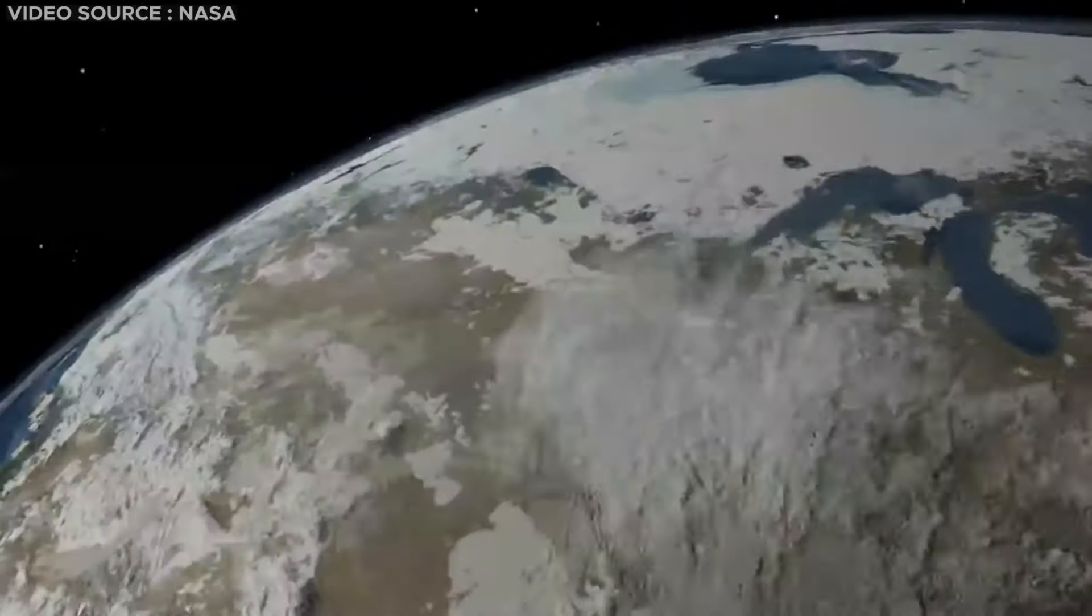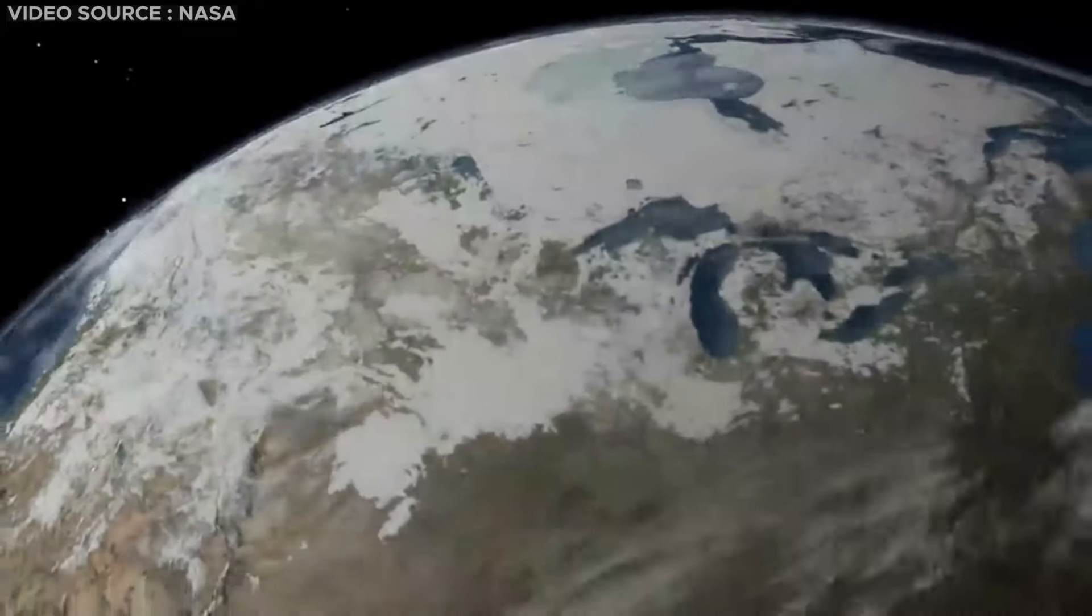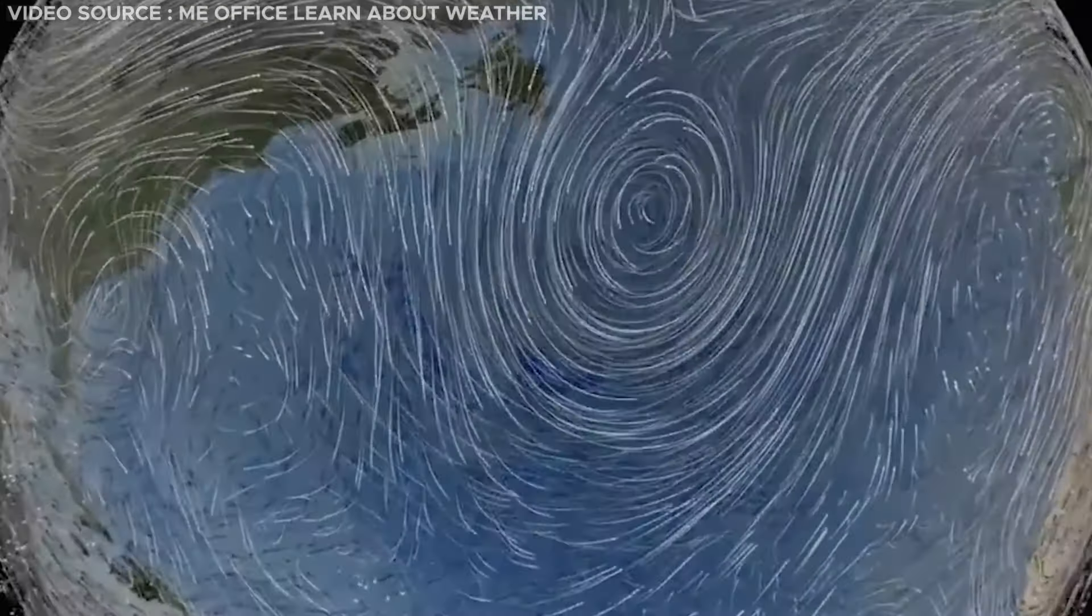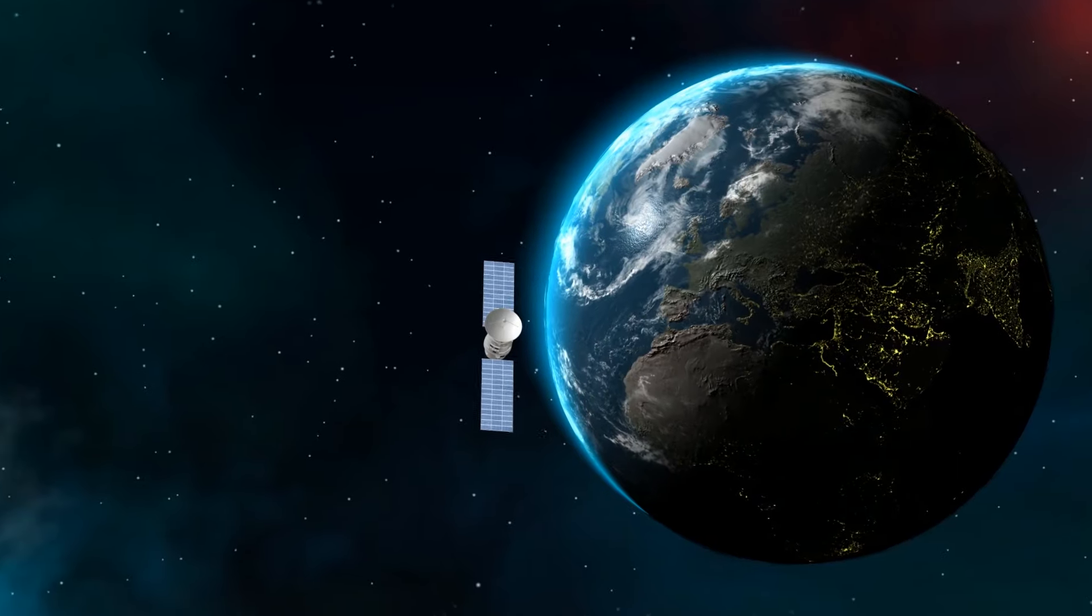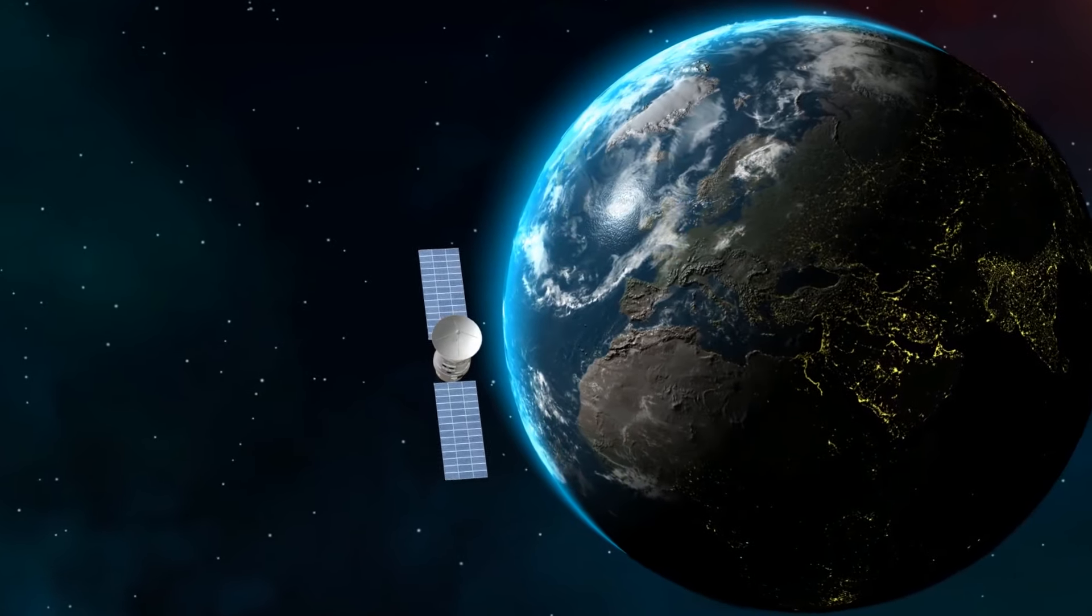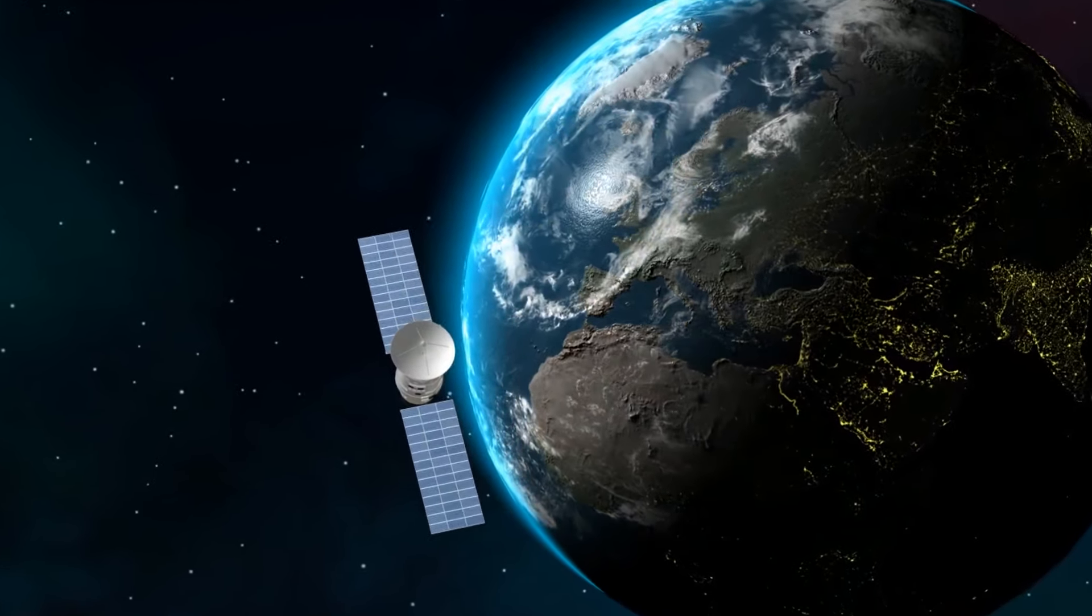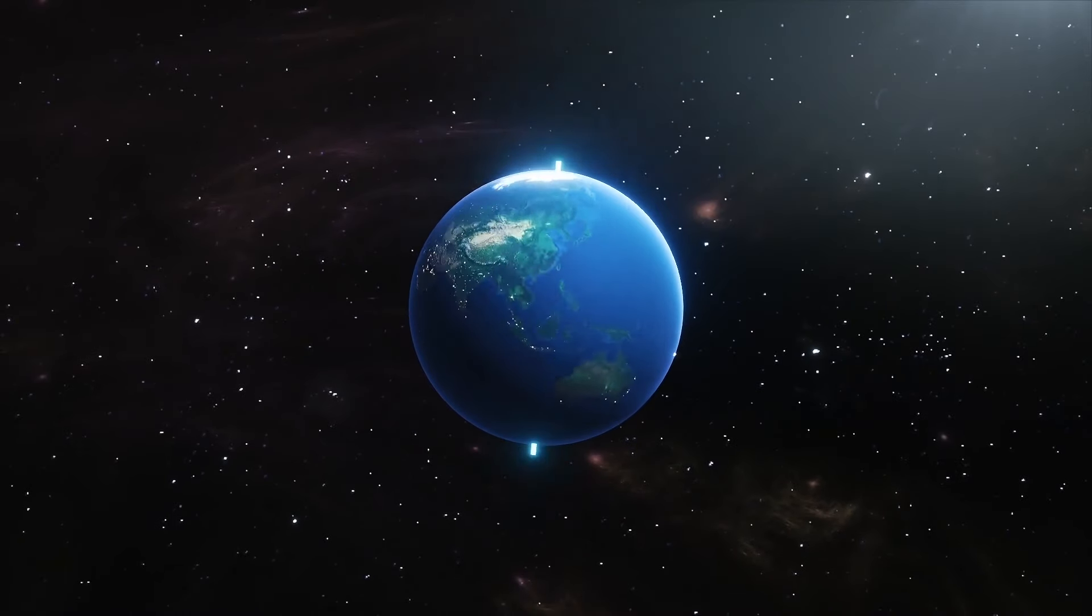Earth encounters resistance from the surrounding air and the surface it traverses, generating friction that gradually decelerates its rotation. In the vast expanse of space, where Earth orbits, the absence of air impedes any substantial resistance to its rotation.